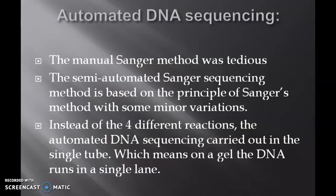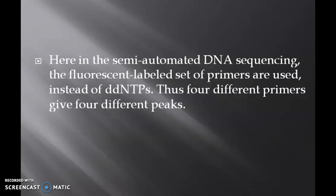The manual Sanger method was tedious. The automated or semi-automated Sanger sequencing method was used and is based on the principles of Sanger's method with some minor variations. Instead of the four different reactions, automated DNA sequencing was carried out in a single tube, which means on a gel, the DNA runs in a single lane. Here, the fluorescent labeled set of primers are used instead of ddNTPs. Thus, four different primers give four different peaks.